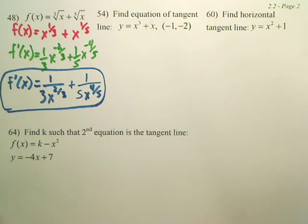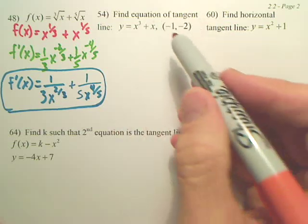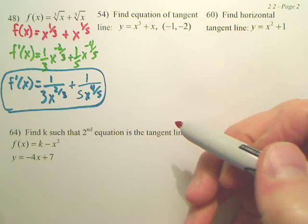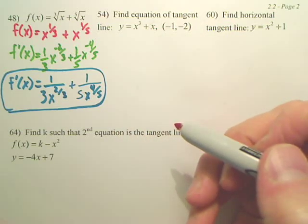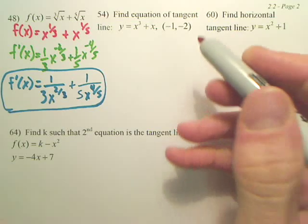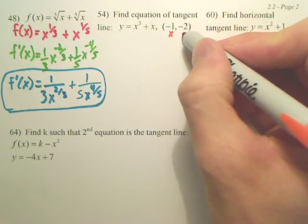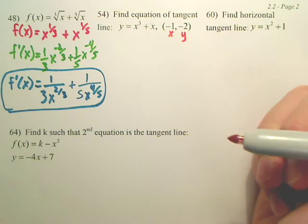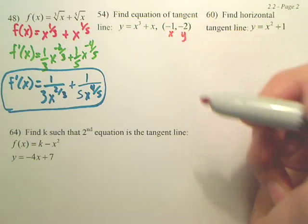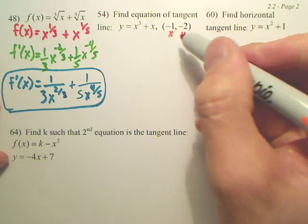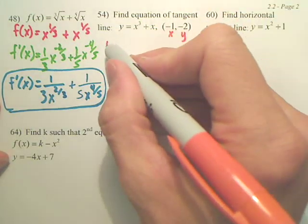Number 54. The equation of a tangent line. To get the equation of a tangent line, you need m, x, and y. You have x and y. We just need m at this point. So to find m, or the slope, at this point, you need to find the derivative first.